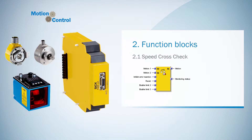Let me also give you a short overview of the different inputs and outputs of this function block. First we have the inputs Motion1 and Motion2 — here the signals of the encoders are connected, so the SpeedCrossCheck gets all the information provided by the encoders. Furthermore, there is the optional input InhibitErrorReaction, which can be used to prevent the error reaction in specific operational situations and reset the fault automatically.